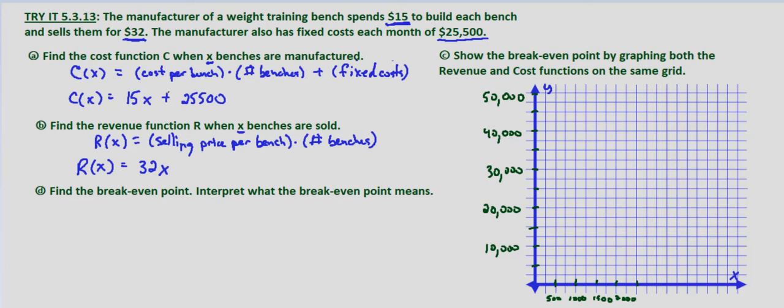If we graph our cost function, we're looking at a y-intercept of $25,500, because our cost function is C of X equals 15X plus $25,500. So $25,500 is right about here. And if we check specific points at, let's say $1,000, that would be $25,500 plus $15 times $1,000, or $15,000. And that's going to be at $40,500.